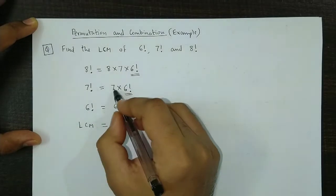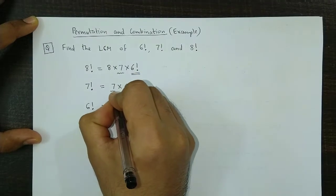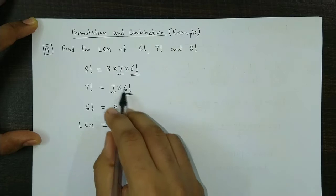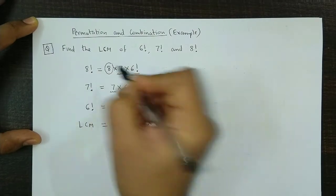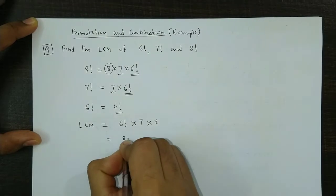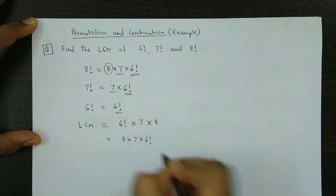Next is 7. 7 is common in two of them, so we have 7 here and 7 here. So next is 7, and the last term which is left out is 8. So this could be written as 8 into 7 into 6 factorial.